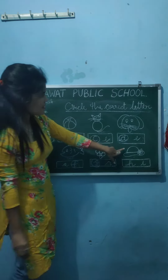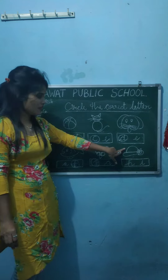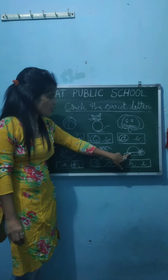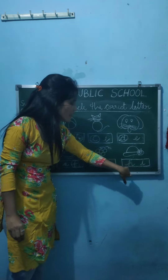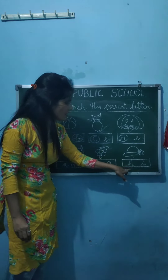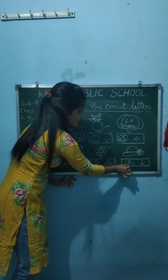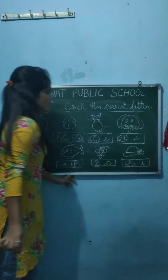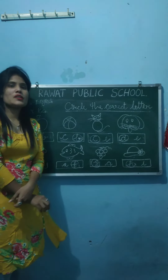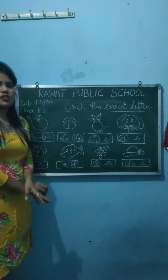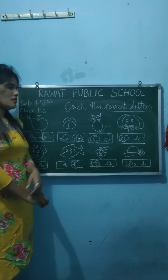Now next. H for hat. Which one is H? This one. Make a circle. I think you understood. See the pictures and circle the correct letter.